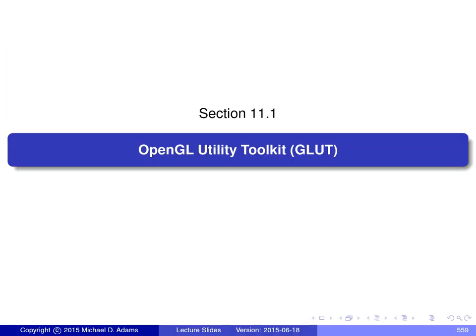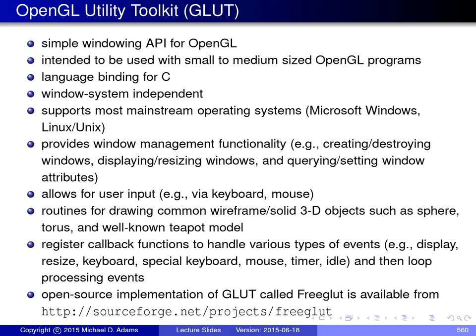In the next few slides we're going to look at the OpenGL utility toolkit, or GLUT, in more detail. Because OpenGL only performs rendering and doesn't support window management functionality or I/O — for example using keyboards and mice — when OpenGL is used, typically some other helper library has to be used along with it to provide window management and I/O functionality. The particular helper library discussed in this presentation is GLUT.